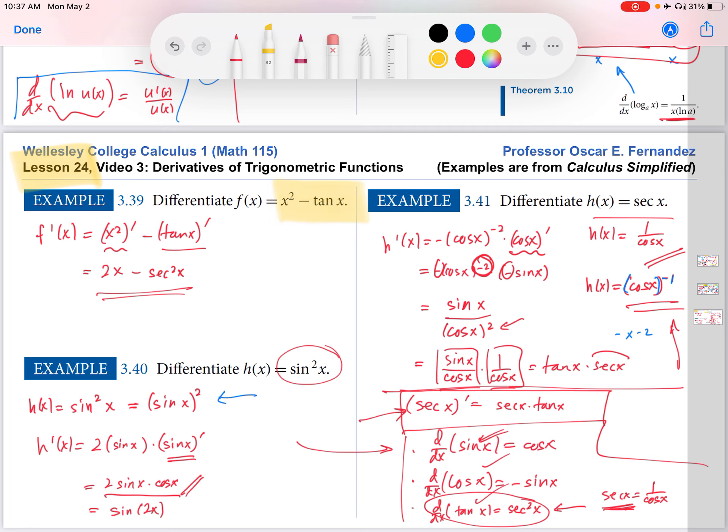This is lesson 24 for us. This is a difference of function. So the derivative is the difference of the derivatives. That was a derivative rule we talked about long ago.